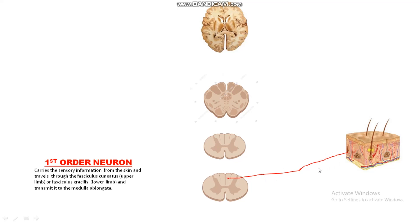Here on screen, the fasciculus cuneatus and fasciculus gracilis locations are shown. If the sensory information is coming from the upper limb, the first-order neuron will travel through the fasciculus cuneatus as indicated. If the sensory information is coming from the lower limb below the level of thoracic six vertebra, the first-order neuron will travel through the fasciculus gracilis, as shown on screen.